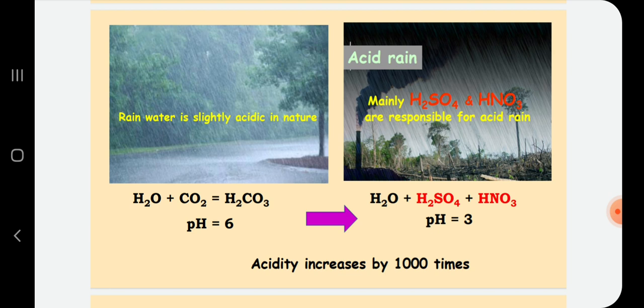So, by change in pH from 6 to 3, the acidity increases by 1000 times. The result will be dangerous. We will discuss it a little bit later.